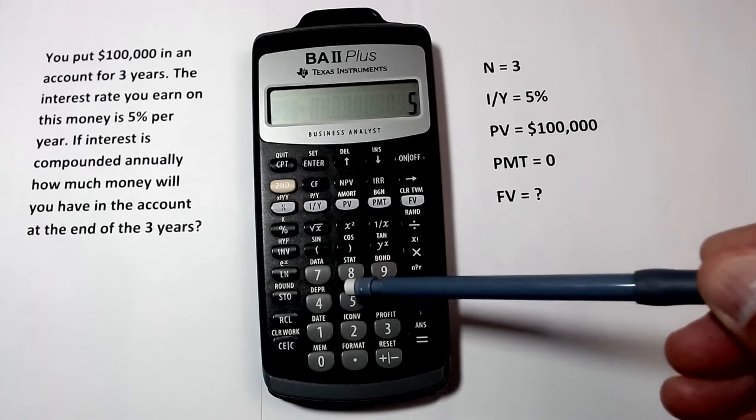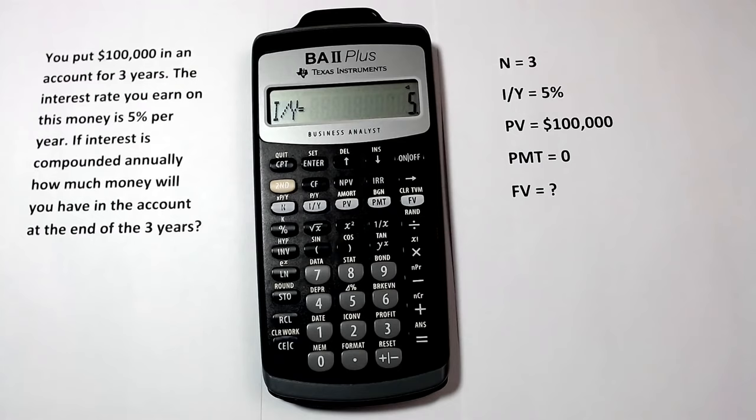Now, we'll need to enter the present value. It's important that we enter the present value as a negative number, especially when we're doing more complicated problems down the road. This is by convention for this and some other calculators that provide a time value of money function.